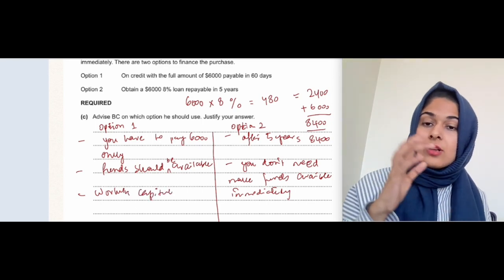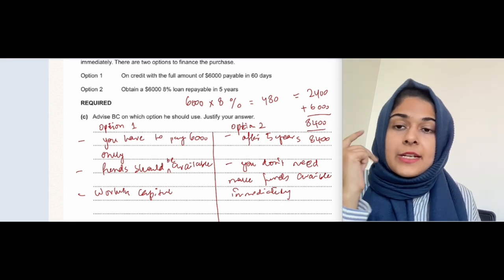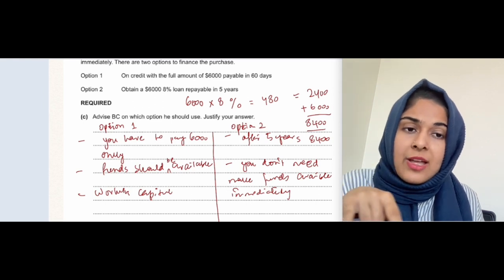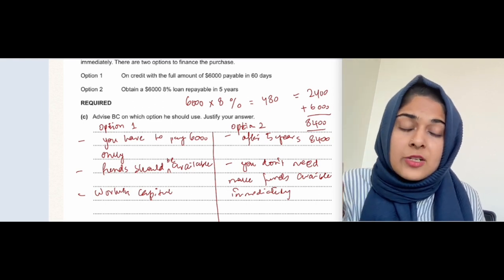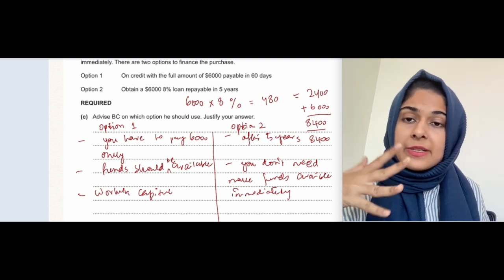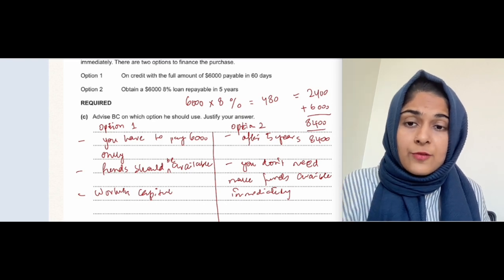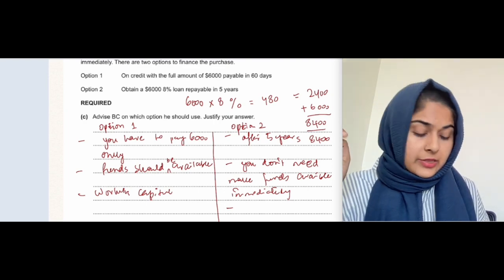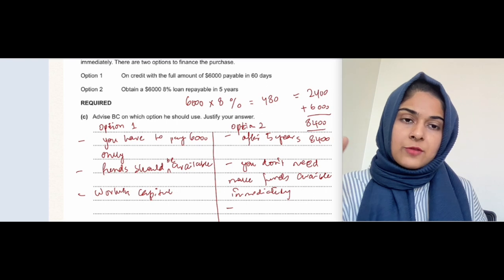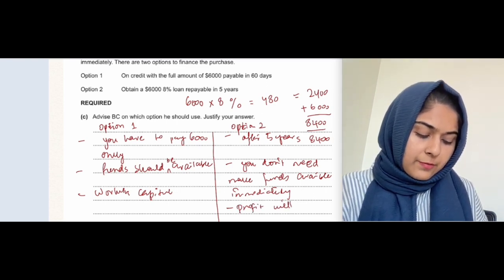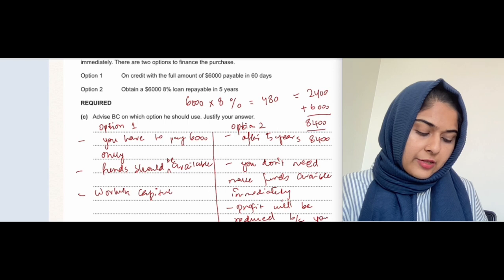In option one, working capital will be affected in 60 days. Working capital will decrease because current assets minus current liabilities — and this business already has an overdraft. The overdraft might increase further if current assets aren't increasing and there's no cash. In option two, the disadvantage is that you pay interest every year, reducing profit annually.